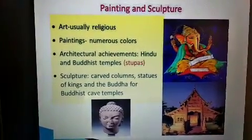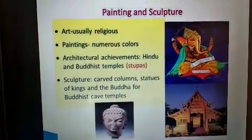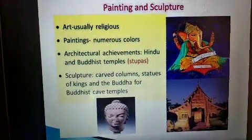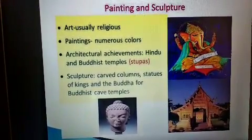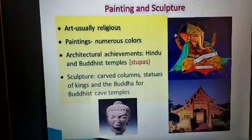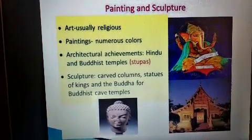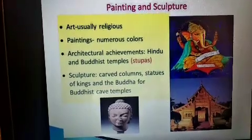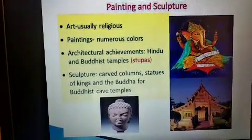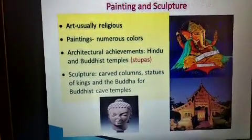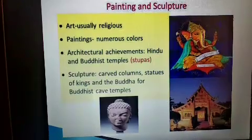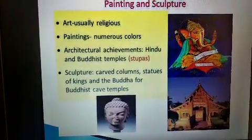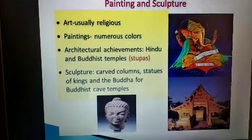This is about painting and sculpture of the time of the Gupta Dynasty. They used to draw usually religious pictures, paintings, and fill various colors. Architectural achievements include Hindu and Buddhist temples, stupas, sculpture, carved columns, and statues of kings and the Buddha for Buddhist cave temples. They made many paintings and sculptures which archaeologists are studying nowadays to know more about the Gupta Dynasty.